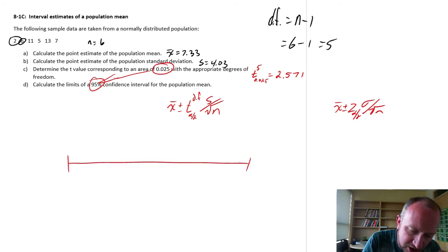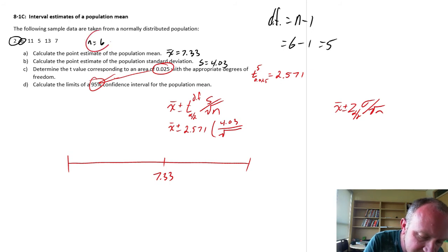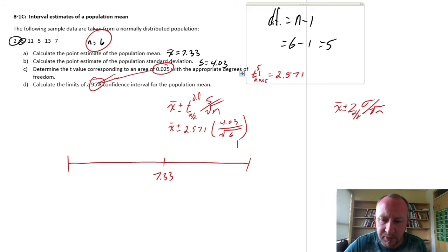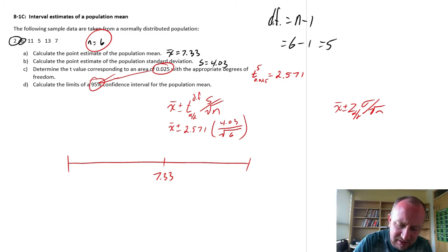Okay. So, our limits. We have x-bar, we calculated 7.33. That margin of error, now we have that critical value, is 2.571, times s, which we obtained was 4.03, divided by the square root of our sample size, which is 6. And so, now we can figure out those upper and lower limits. Let me do this in stages, actually.